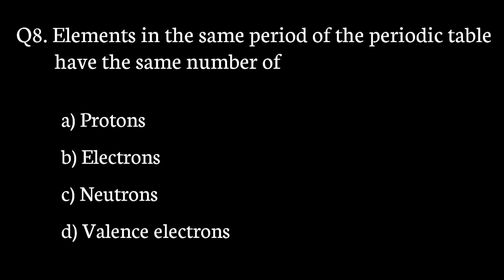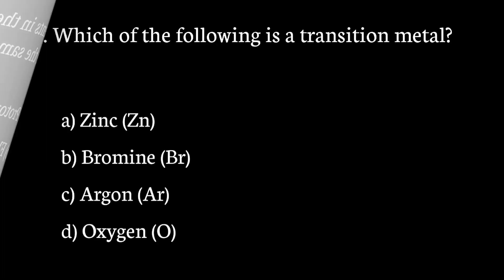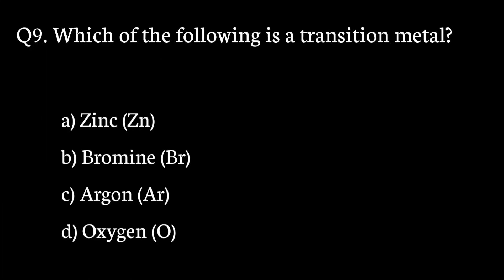Question number 8. Elements in the same period of the periodic table have the same number of — the correct answer to that question is option D. Valence electrons.